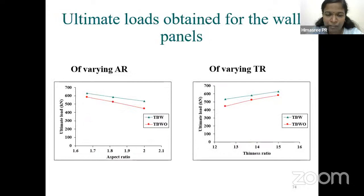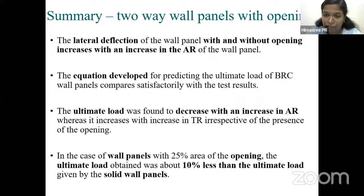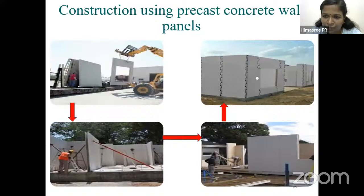The presence of opening increased the deflection at the center of the wall panel along both height and length. For wall panels with openings, the ultimate load was reduced by approximately 10% compared to solid wall panels. The summary of Phase 4 shows that lateral deflection increases with increase in aspect ratio, the proposed equation compares satisfactorily with test results, ultimate load decreases with increase in aspect ratio, and the 25% opening caused only a 10% reduction in load.